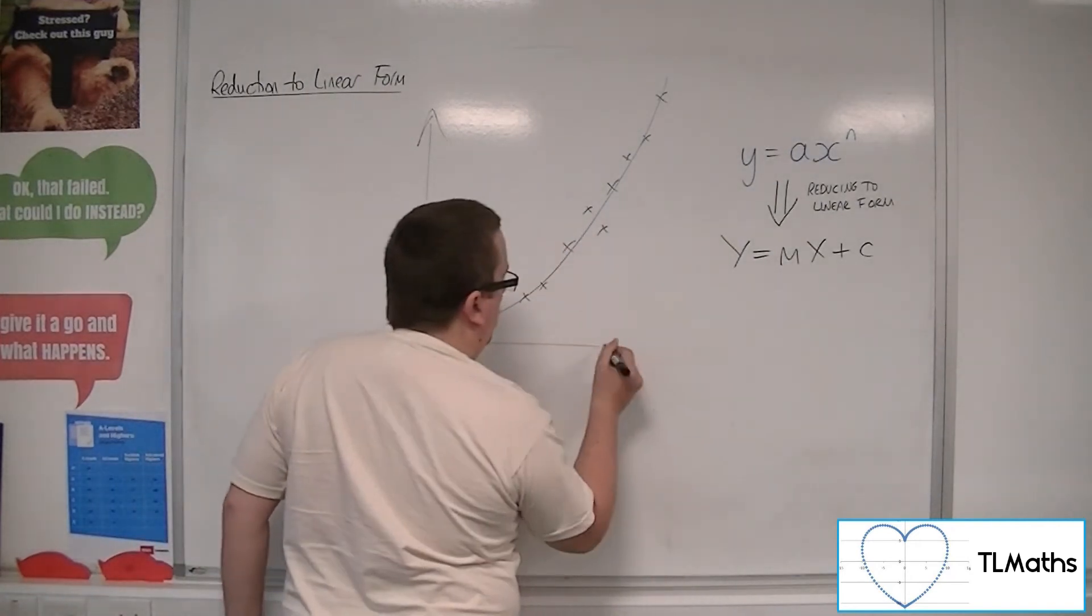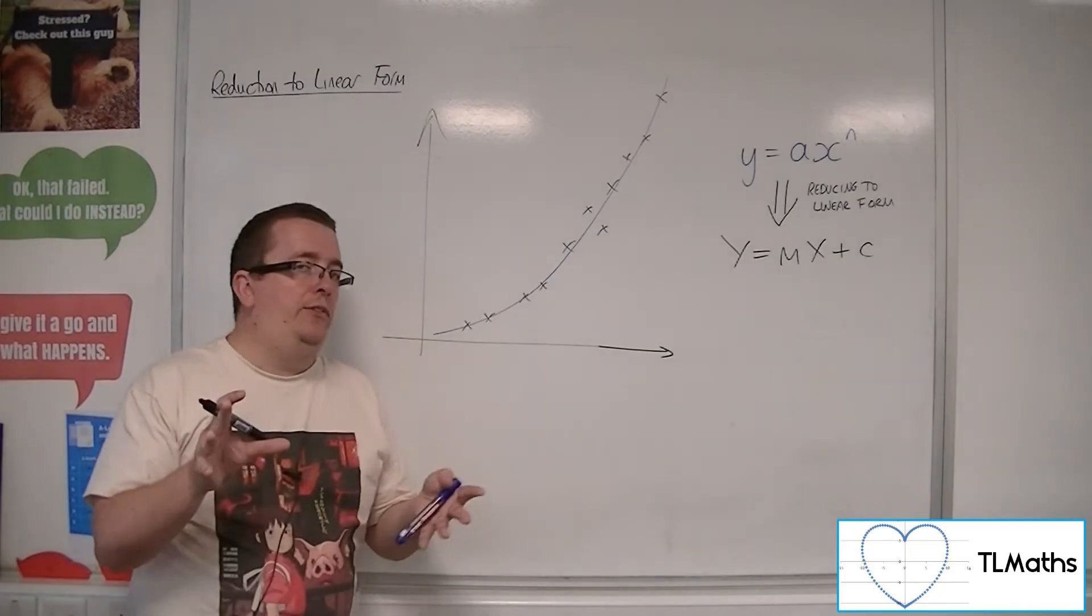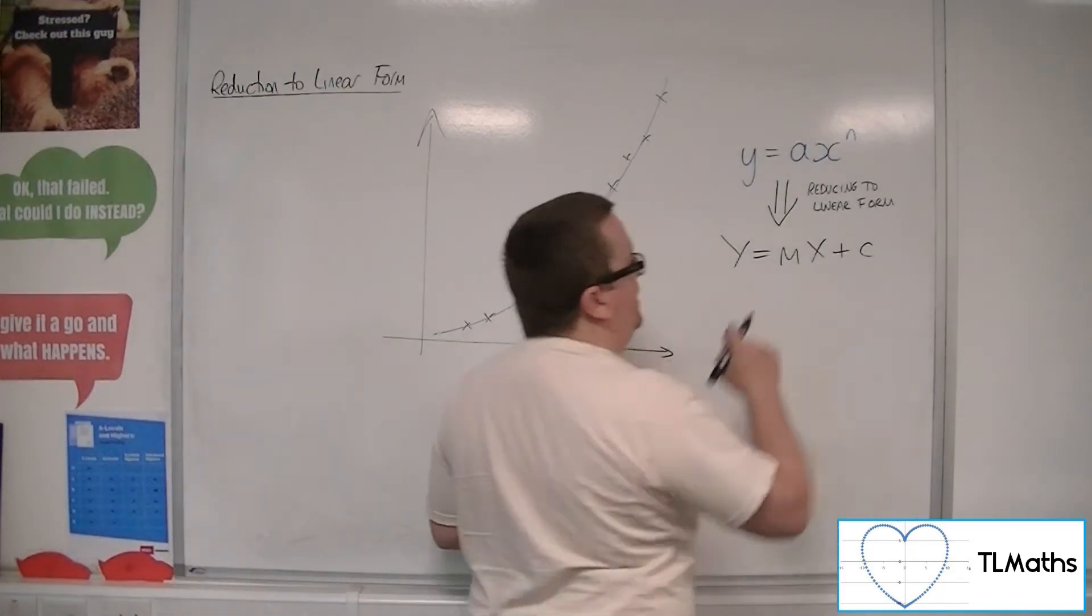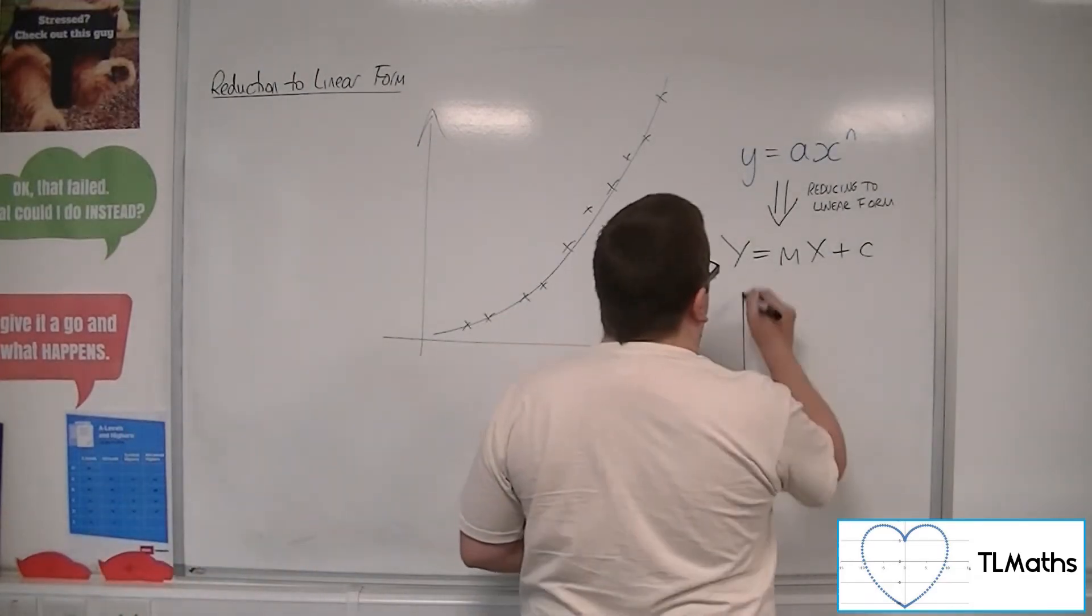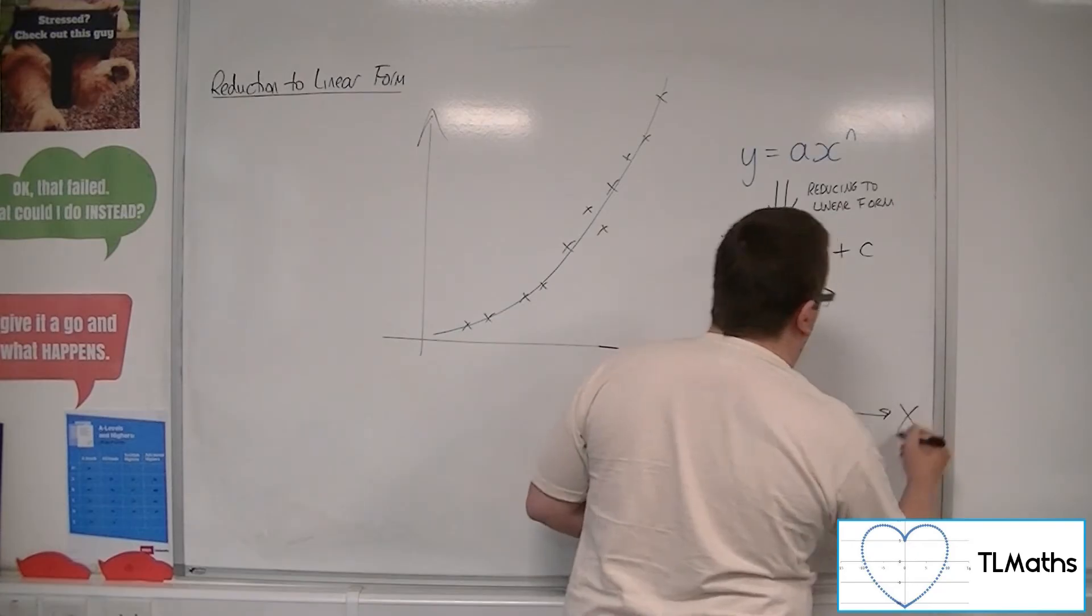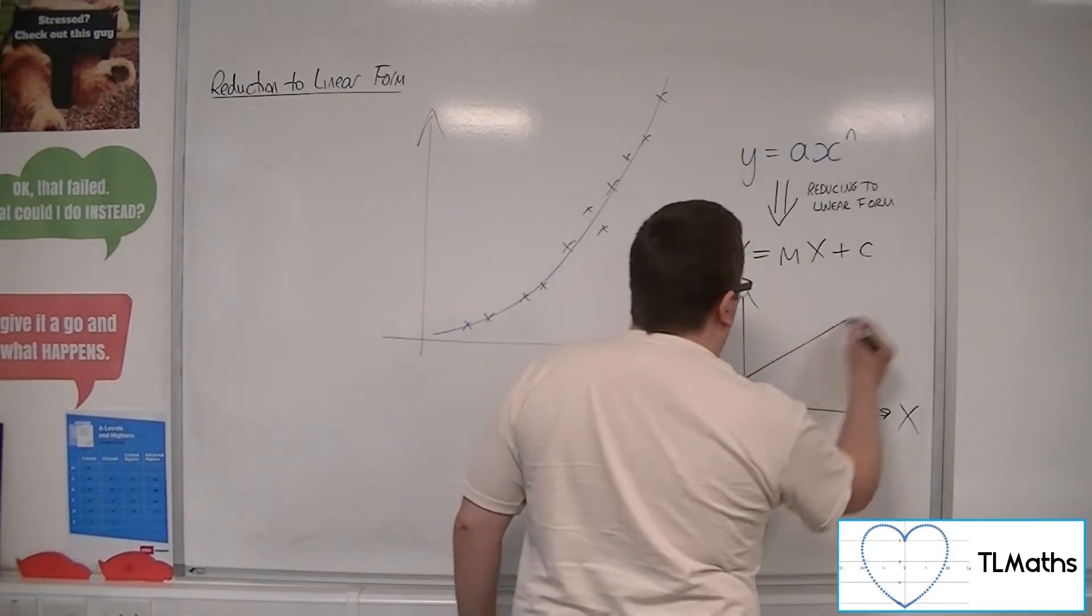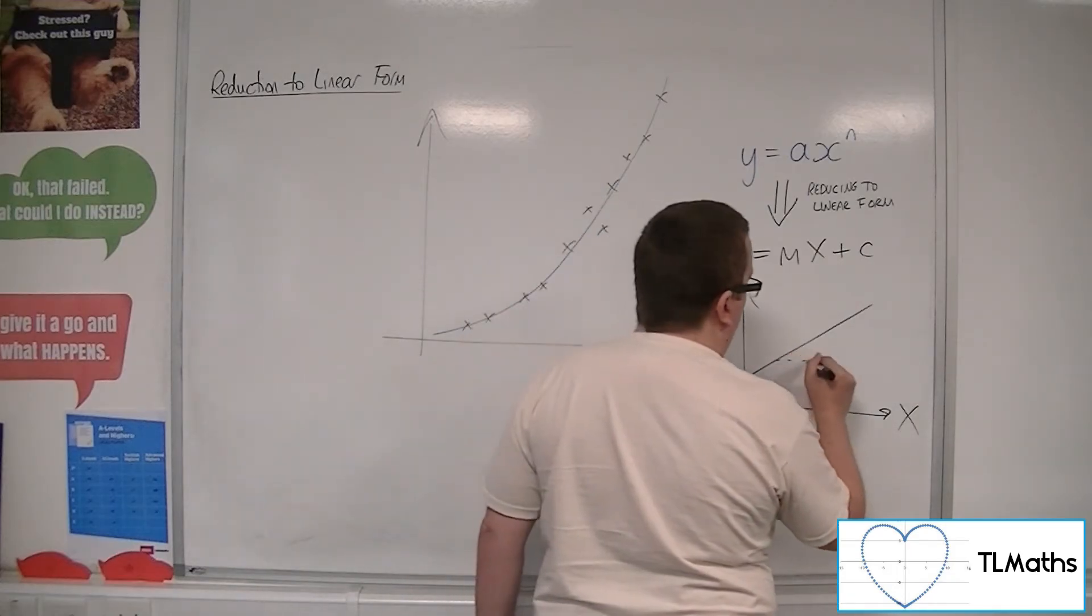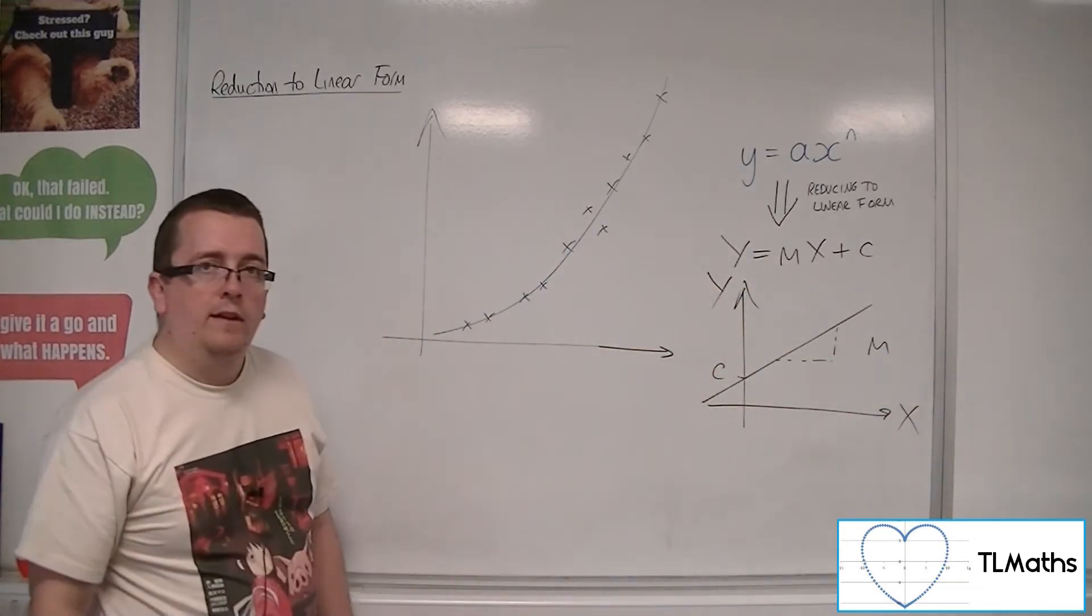Now, the reason why we might want a straight line equation is because it's much easier than to get the gradient and y-intercept of a straight line. So what we then do is we plot our new coordinates, x and y, and it gives us a straight line equation from which we can find c, from which we can work out the gradient m.